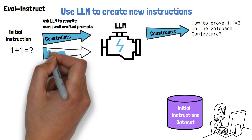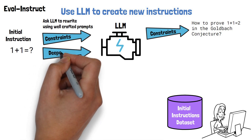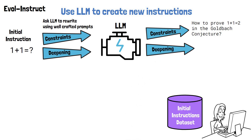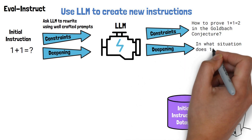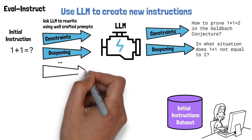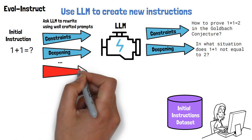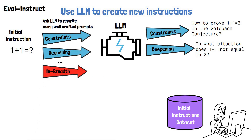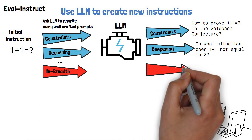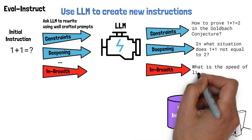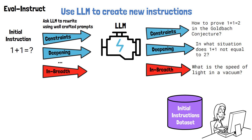Adding constraints is one example of instruction evolution. Another example is deepening, where the model will yield a matching new instruction. Both adding constraints and deepening, and a few more which are not presented here, are called in-depth evolving, because they remain with the idea of the original instruction. Another type of evolving is called in-breadth, where the prompt asks the LLM to create an entirely new instruction by taking inspiration from the original instruction, and the model yields a completely new instruction.